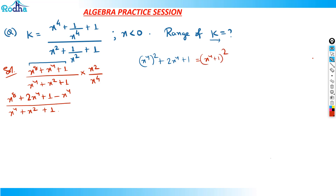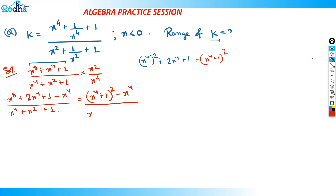So I can write this as (x⁴ + 1)² − x⁴, all divided by x⁴ + x² + 1. Now I can get this in the form of a² − b² by rewriting x⁴ as (x²)², giving (x⁴ + 1)² − (x²)².